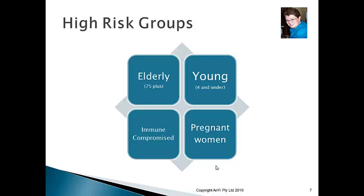Now let's talk about the people — the third P. There are four high-risk groups. The elderly — generally 75 and above — and the young — generally four and under — are the two main groups. These age thresholds are general rules, not exact cutoffs. These groups are high-risk because they're more likely to get food poisoning and, if they do, more likely to be very, very sick.